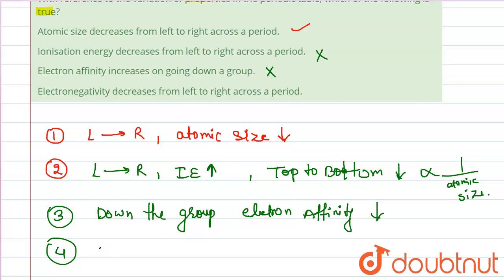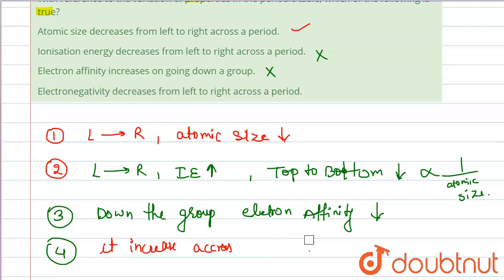Electronegativity increases across a period and decreases down the group. The increased distance and increased shielding weaken the nuclear attraction, so an atom can't attract electrons as strongly going down the group. Electronegativity increases across a period, so the statement that it decreases from left to right is not correct.